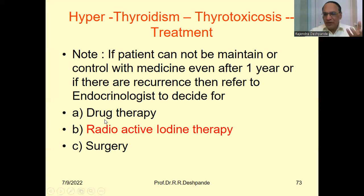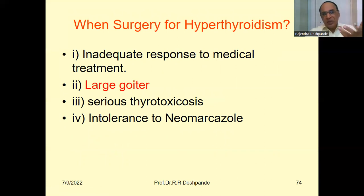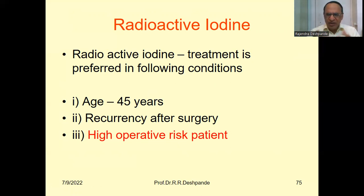Surgery indications: inadequate response to medical treatment, a larger goiter, serious thyrotoxicosis with intolerable symptoms, and intolerance to Carbimazole. Radioactive iodine is preferred when the patient is aged 45 years or more, in cases of recurrence after surgery, or when there is a high operative risk — such as poor general health, uncontrolled diabetes, or uncontrolled heart problems. In those cases, surgery cannot be done and radioactive iodine is the alternative.